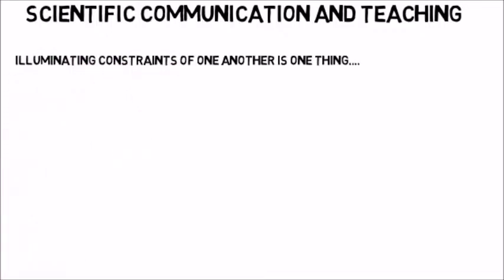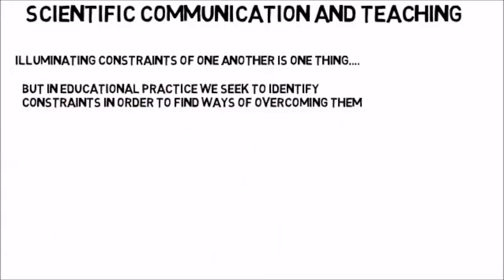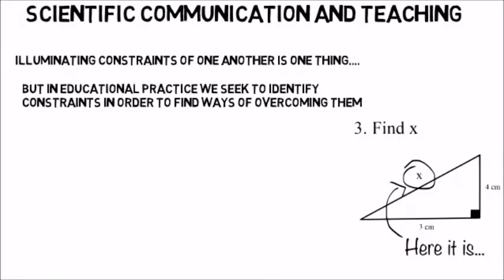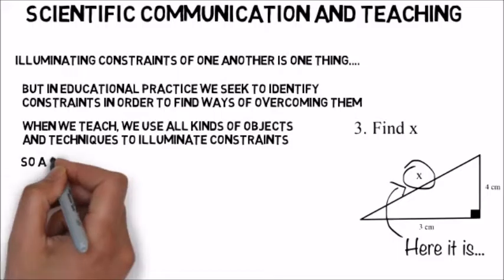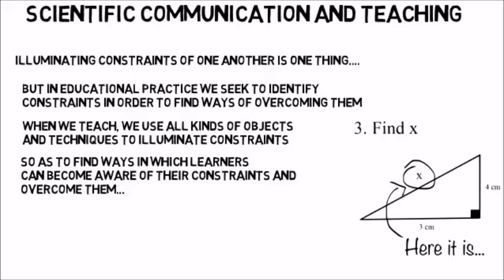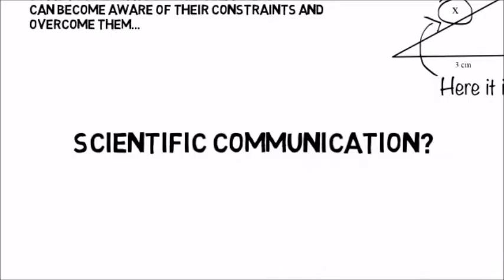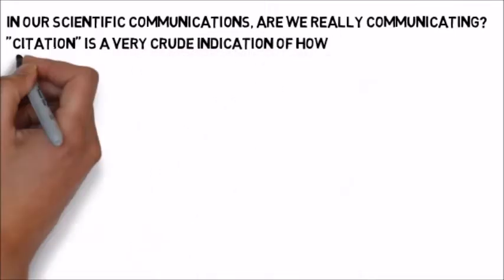I want to make the connection to teaching for a very simple and important reason. In educational practice, identifying constraints isn't enough. In fact, we identify constraints — and particularly teachers identify constraints — in order to find ways of helping somebody subjected to those constraints to overcome them. Imagine a child answers a maths question incorrectly. The teacher's question is: what's going on in the child's head? Where's the blockage? We use all kinds of techniques, objects, and activities to try and work out what's going on, and then find a way of helping them. I think our scientific communication should also be like this. The fact that it isn't is a reflection of the technologies we have had in the past, but not a reflection of the technologies we have now.